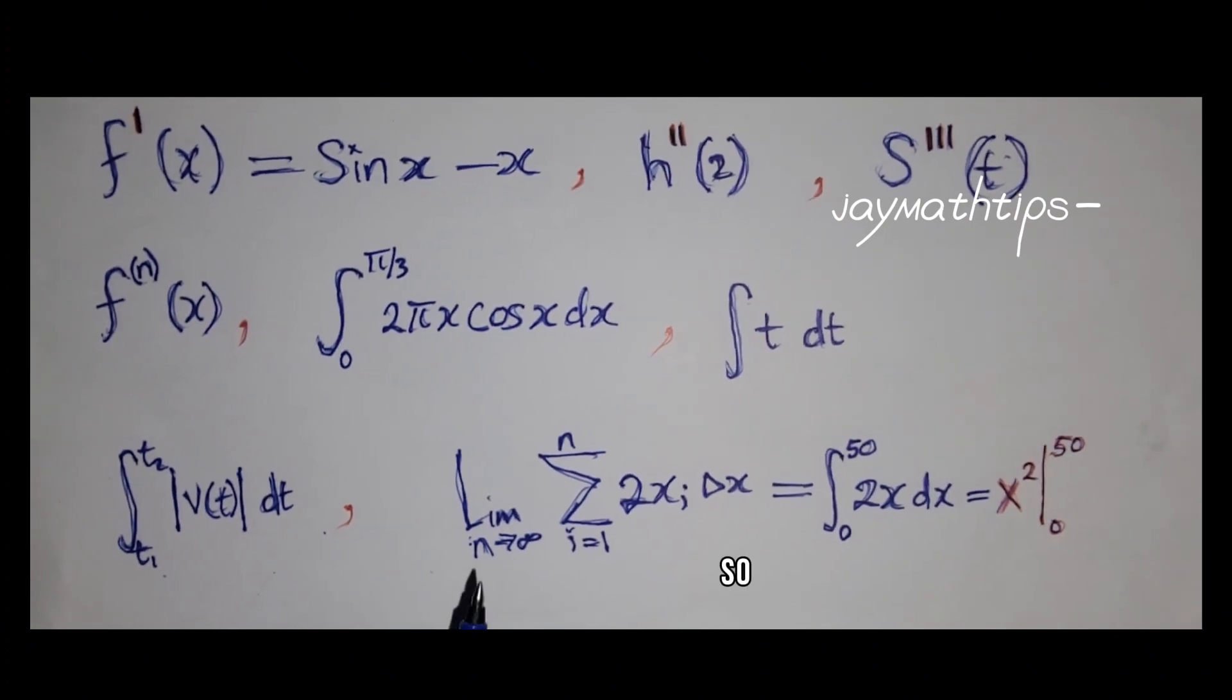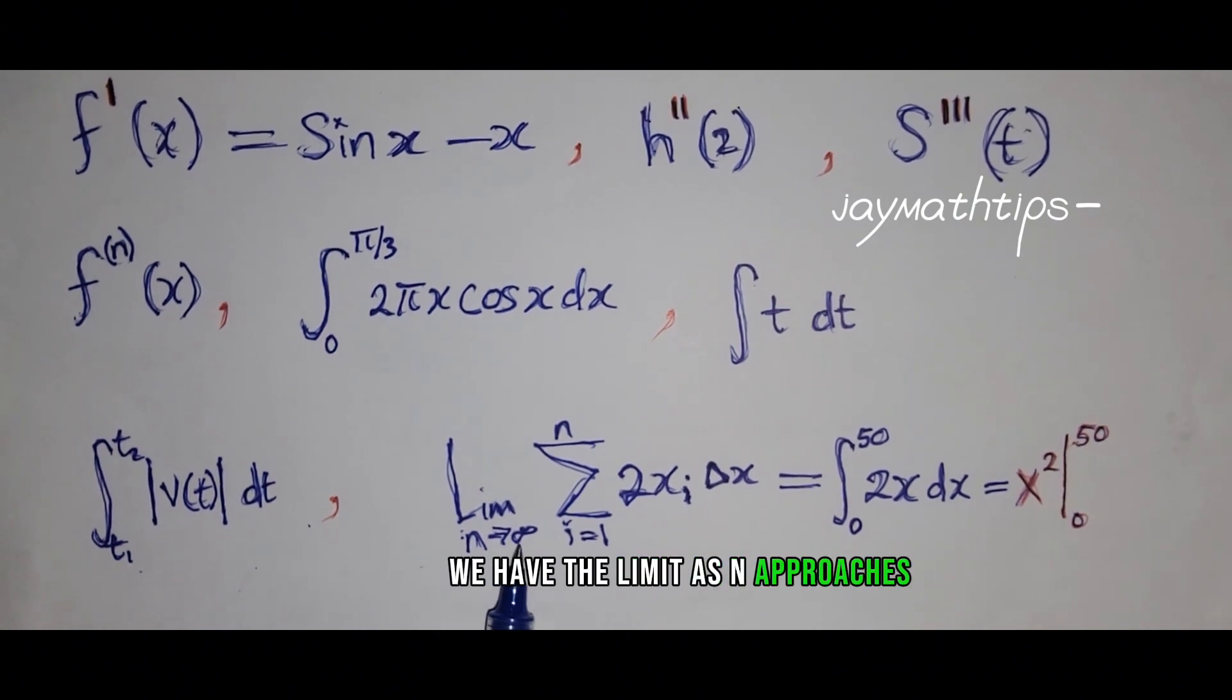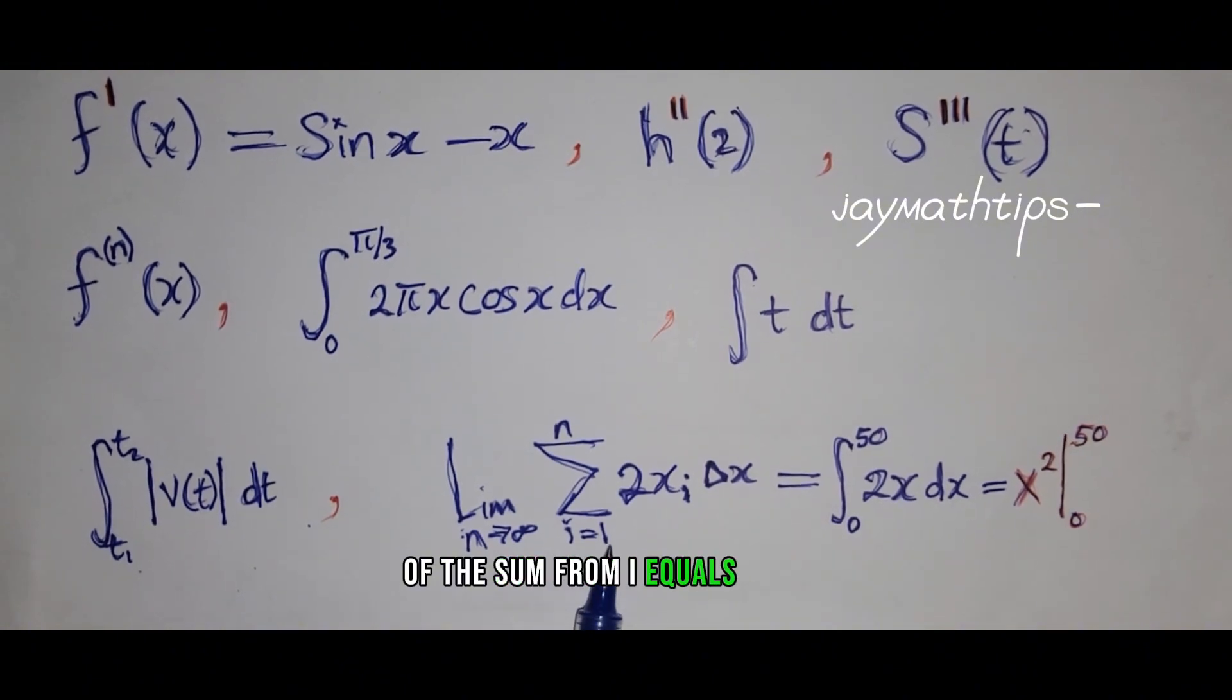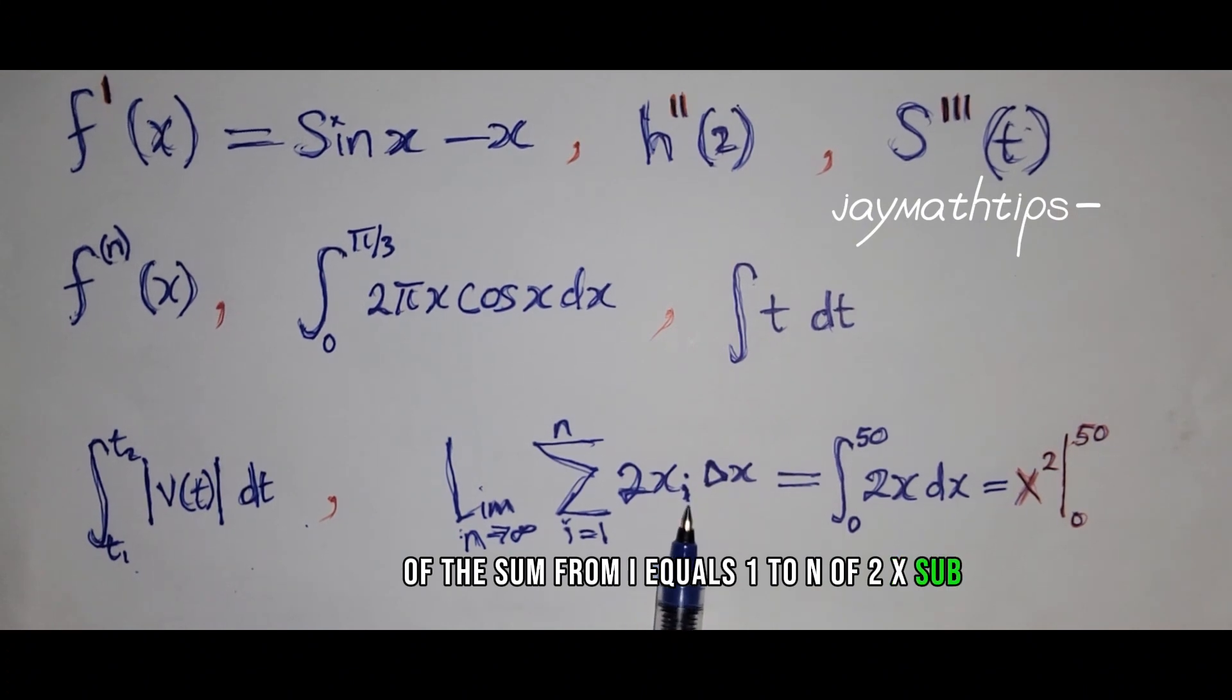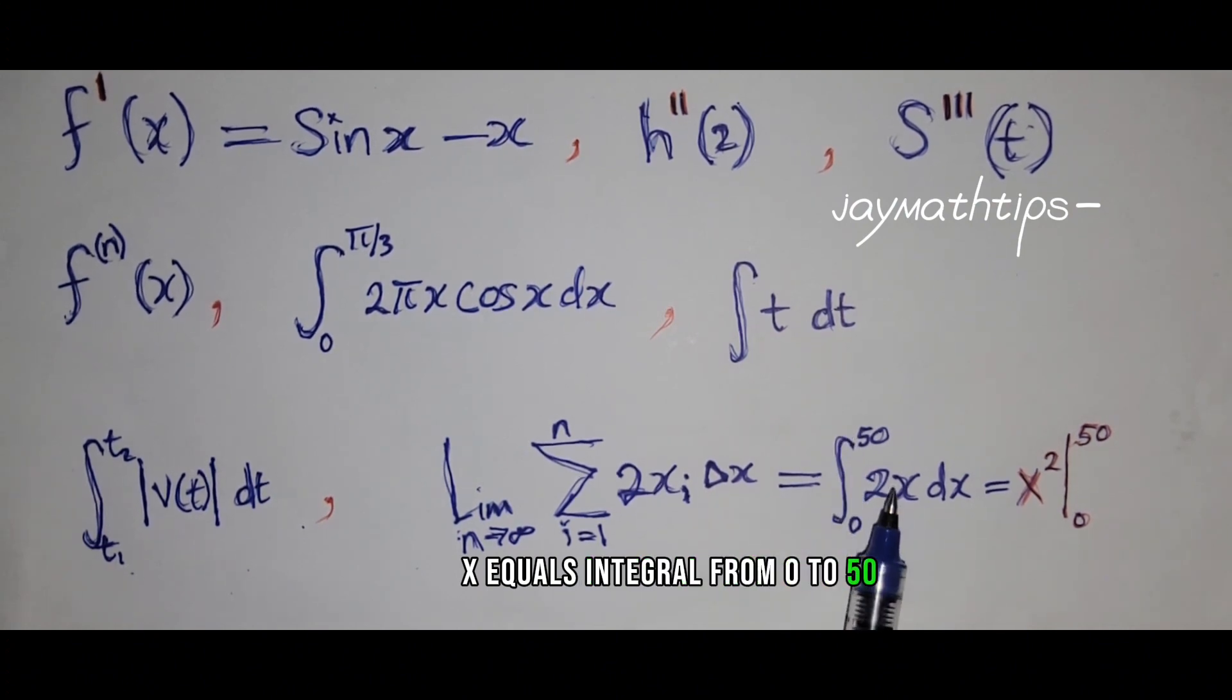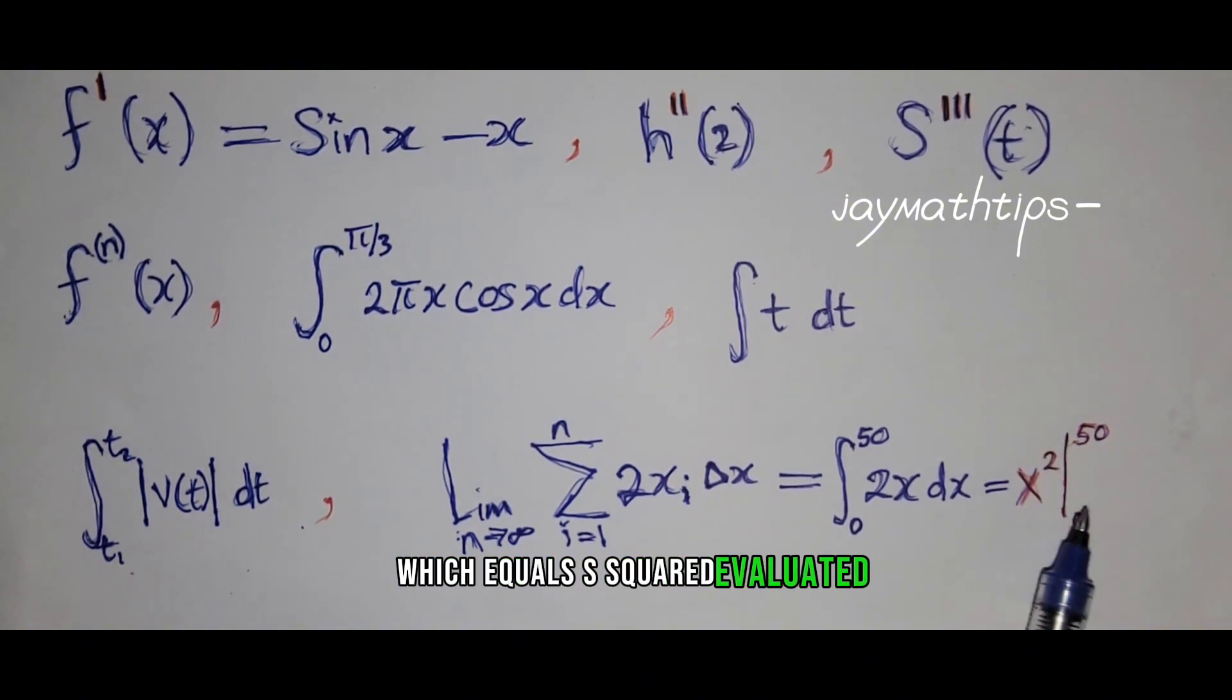So this is the last one. We have the limit as n approaches infinity of the sum from i equals 1 to n of 2x sub i delta x equals the integral from 0 to 50 of 2x dx, which equals x squared evaluated from 0 to 50.